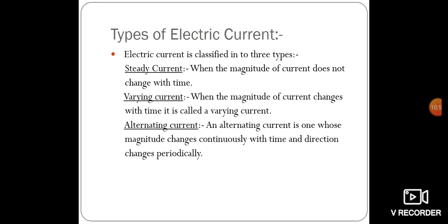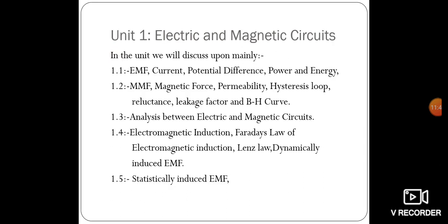Steady current is that where the magnitude of the current does not change with time — it is constant with respect to time. Varying current is when the magnitude of current changes with time. Alternating current is one whose magnitude changes continuously with time and direction changes periodically.